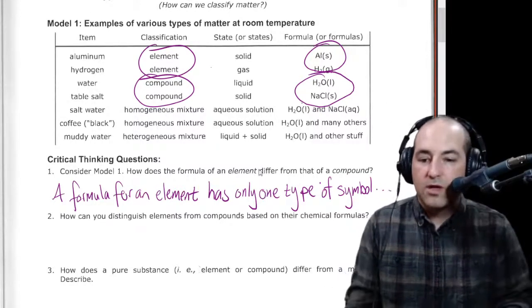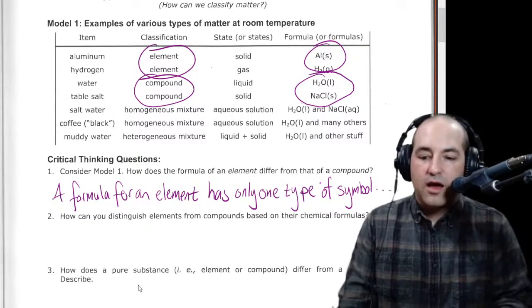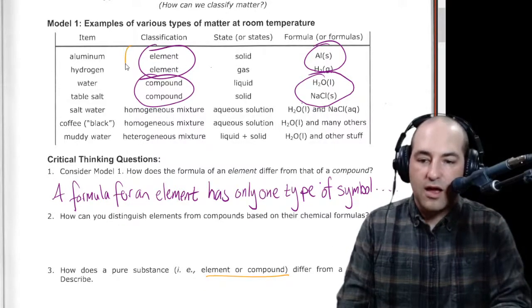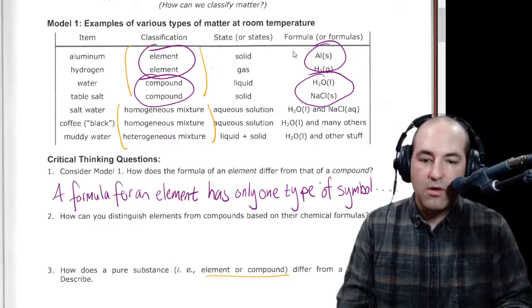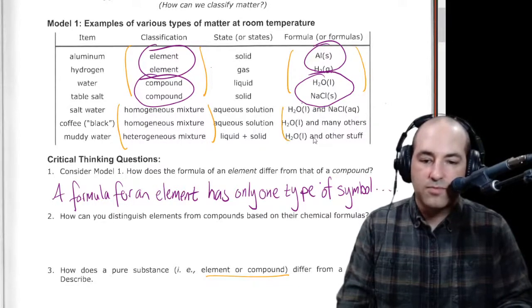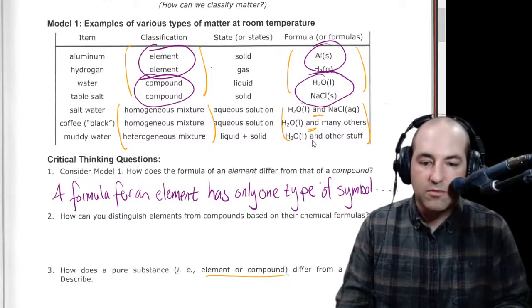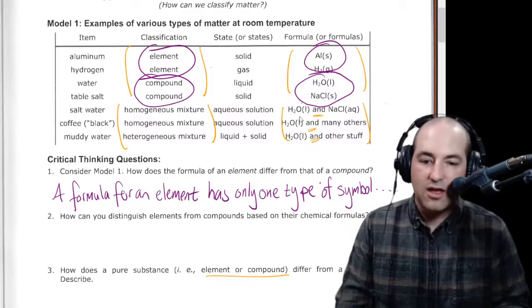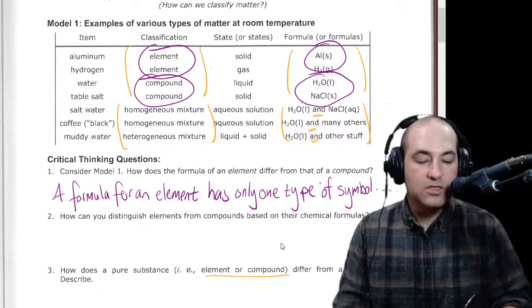And then for number three, once again, we're going back to the chart here. How does a pure substance, element, or compound differ from a mixture? So now we're going to take our elements and compounds as one group and our mixtures as another group. And maybe we're going to compare the formulas of those. And I think you can see a difference here. The thing that sticks out most for me is this word 'and'. So clearly there's many different types of things in a mixture that can't be described just by one chemical formula.